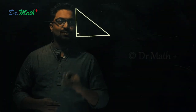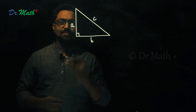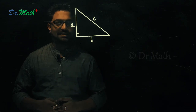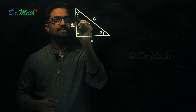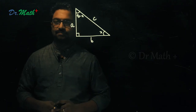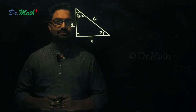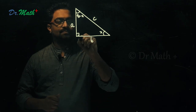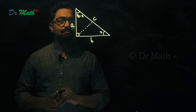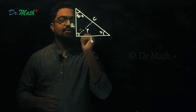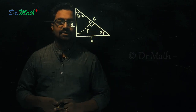Let us consider a right-angled triangle with sides A, B, and C. C is the hypotenuse because it is opposite to 90 degrees. If this angle is X, then the other angle is 90 minus X. Now I'm going to drop a perpendicular line from the right vertex to the hypotenuse, and let me name this line as P — P for perpendicular line.